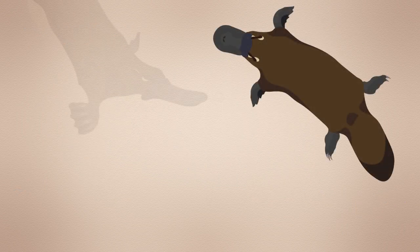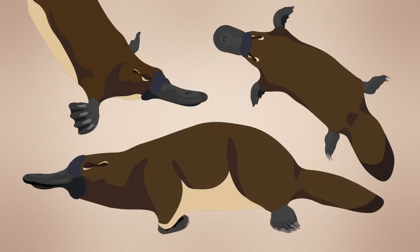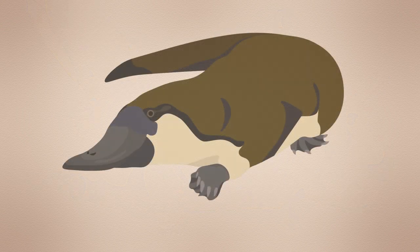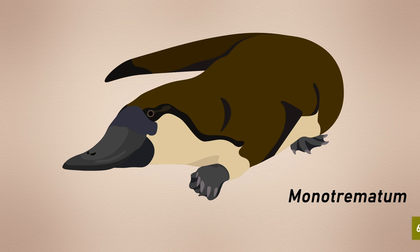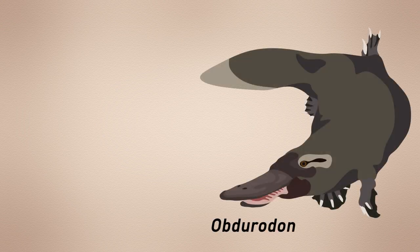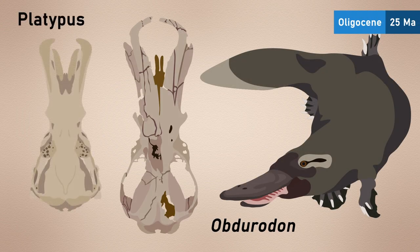Largely, they all look a lot like platypuses. Monotrematin, although known from only fragmentary remains, at 64 million years old is the earliest of such creatures. And by Obdurodon, the platypus form is obvious, their skulls showing clear similarities.